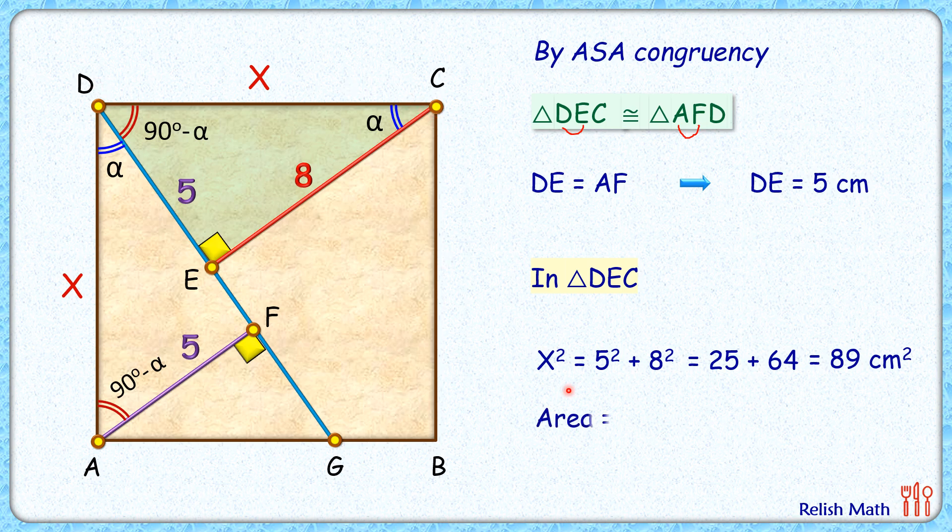Now x square is nothing but the area of this square, and that's what we had to find. Thus area of the square is 89 centimeters squared, and that's our answer. I hope you enjoyed the solution. I will see you in the next video. Till then, take care, bye bye.